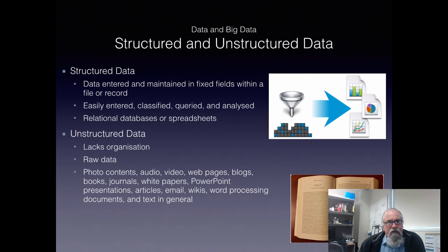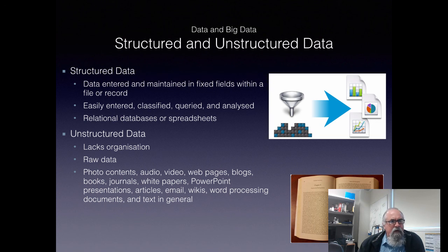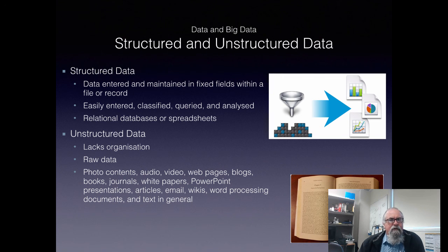In our IoT environment we now have unstructured data — data that lacks organization, such as samples from an IMU. It's raw data. It can also be photo contents: we go back to our agricultural example, we have a picture of a plant with a slight black discolouration on the leaf. How do we analyze that? How do we store it? Do we need to store the entire image or can we pull information from it? Other things like books, journals, blogs, and normal text documents are unstructured — the document is in words, but how do we index and search it? That's where it becomes an unstructured data set.